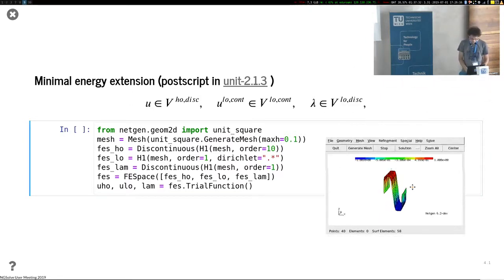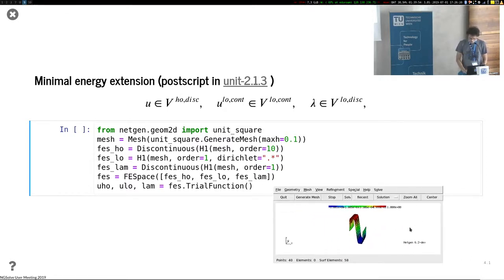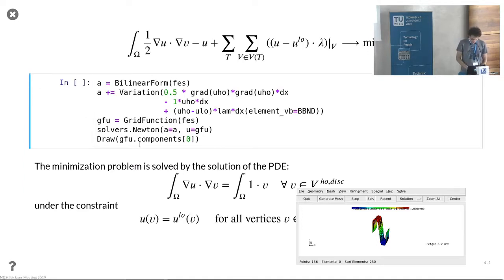And I would briefly want to explain how this is related to the nonlinear minimization problem which Joachim obviously formulated here. So we have the space u - space V_h^o,disc, so higher-order discontinuous. We have a low-order space V_low-order,continuous, and we have a space V_low-order,discontinuous.